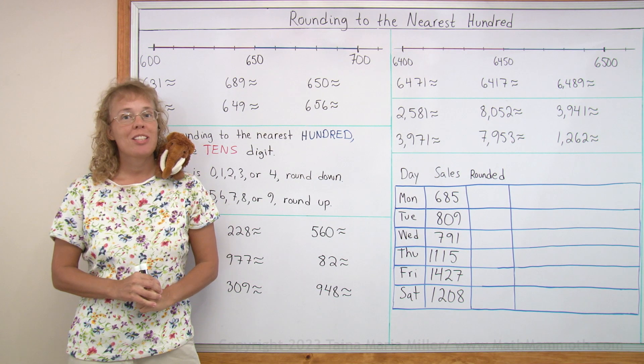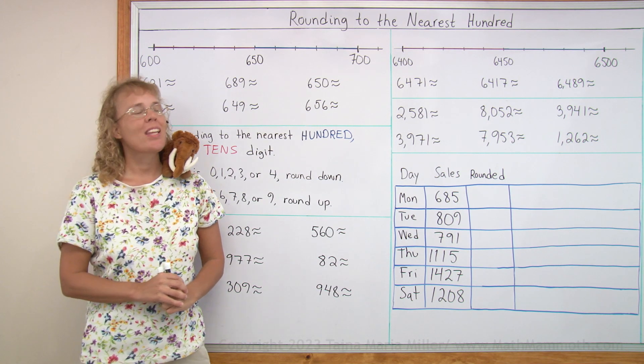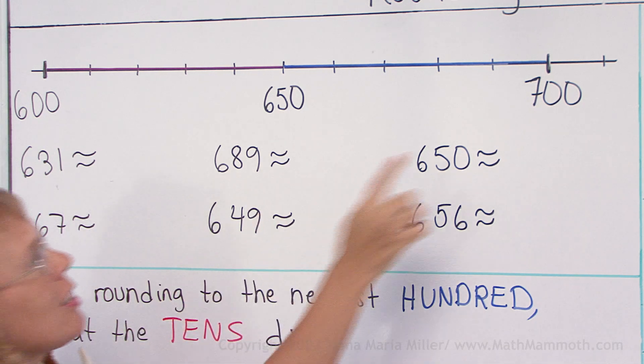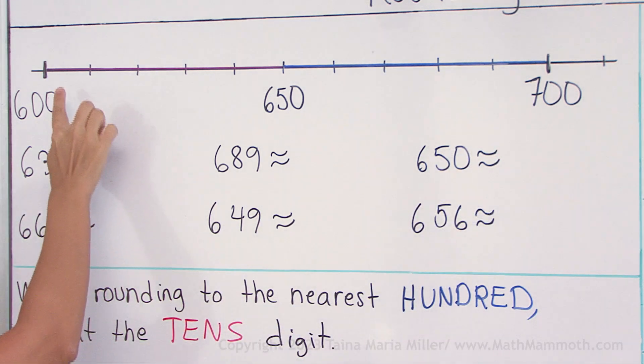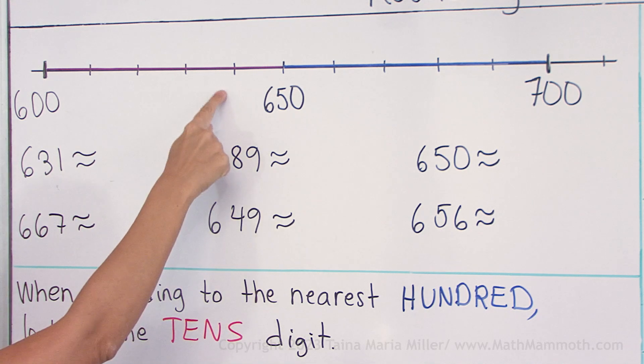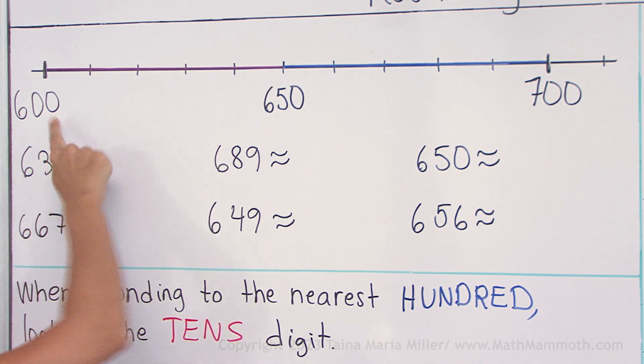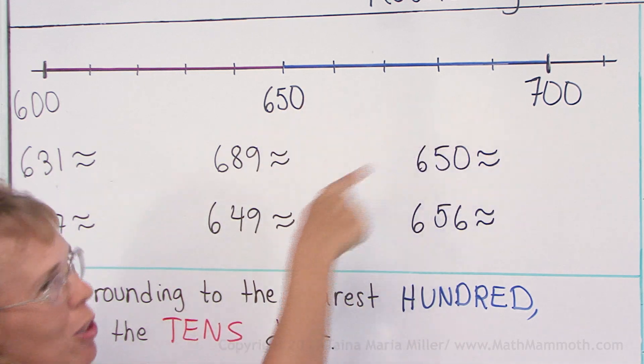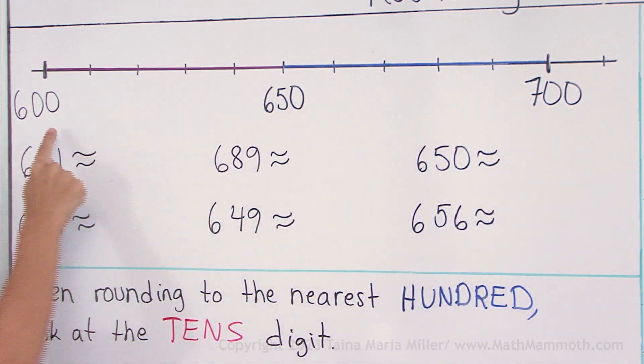In this lesson we are studying rounding to the nearest hundred. I drew here a number line from 600 to 700. All the numbers that would be here, if we are rounding to the nearest hundred, are closer to 600 than they are to 700. And then the numbers here would be closer to 700 than they are to 600, right?